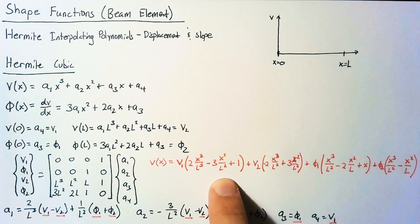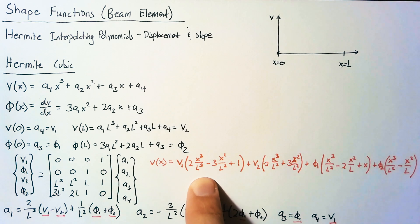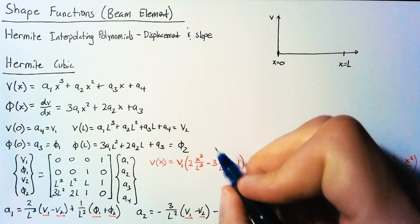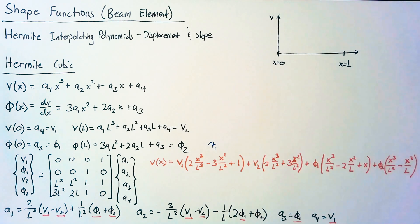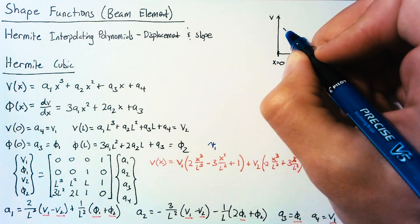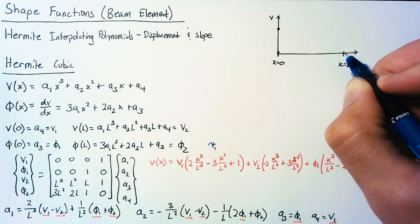So let's look at these shape functions. If we take this first one, which we'll call psi1, we see that it has a displacement at x equals 0 of 1 and a displacement at x equals l of 0.